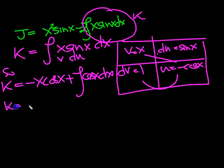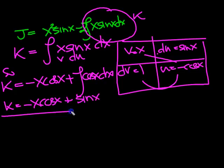So k is equal to then, minus x cos x, plus, and the integral of cos will be sine x. There's k. So now we can write down the final answer then.